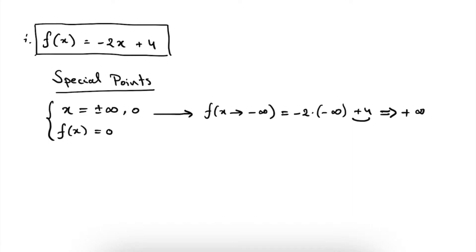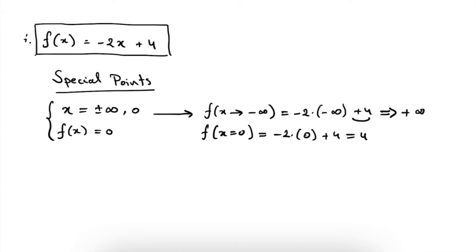So we know that if x becomes a very large negative number, f of x will become a very large positive number. The next special point is when x is equal to 0. So we have minus 2 times 0 plus 4, which is of course equal to 4. So we know that if x is equal to 0, our function value will be positive and will be more specifically 4.